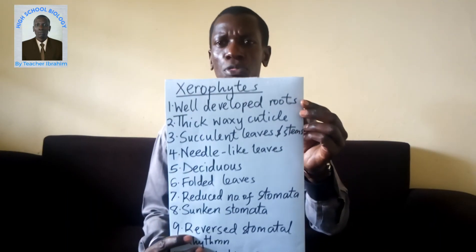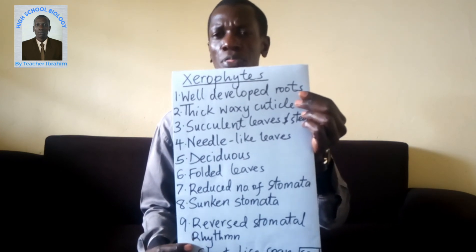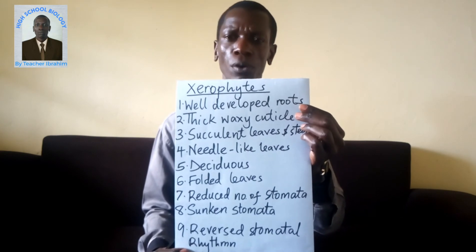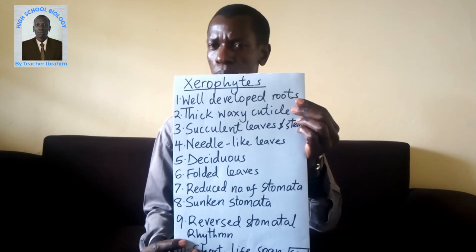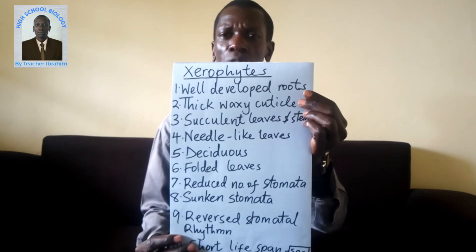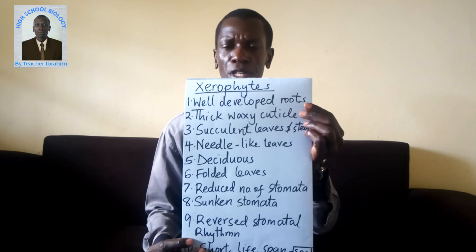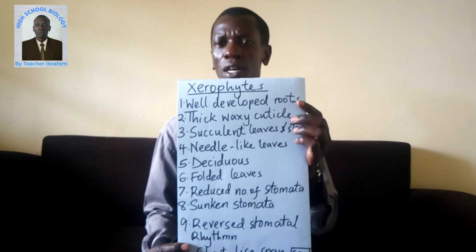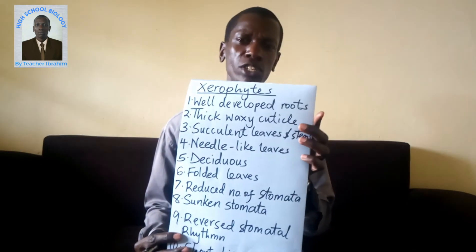Adaptation number seven: they have a reduced number of stomata, which is small so as to reduce the rate of transpiration. These plants lose water through stomatal pores, so having fewer stomatal pores reduces the rate of transpiration. Adaptation number eight: they also have sunken stomata — stomata deeply located within the leaf.